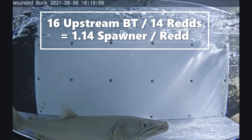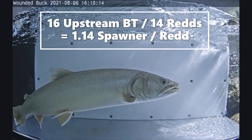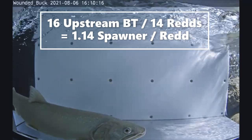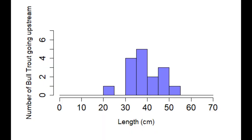Through our study period we counted a total of 16 upstream migrating bull trout and 10 moving downstream through the Vaki Video Weir. We enumerated 14 spawning redds, giving us a 1.14 spawner-to-redd ratio. We found upstream migrating bull trout between 20 and 55 centimeters in length. The most frequent size class was 35 to 40 centimeters with five fish. We saw four fish between 30 and 35 centimeters and three fish between 45 and 50 centimeters migrate upstream.